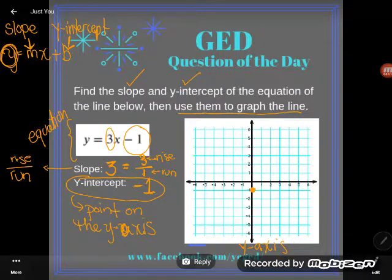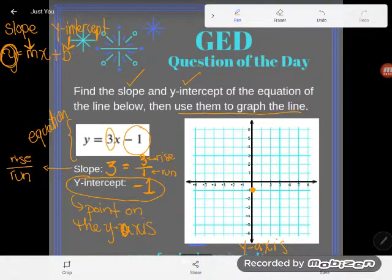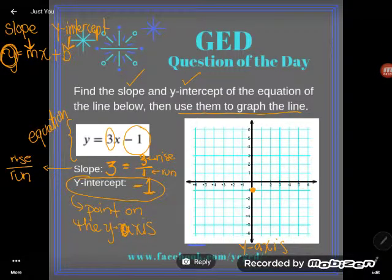So starting at the y-intercept that I was just at, I'm going to move. I'm going to rise 3: one, two, three. And I'm going to run positive 1, so one to the right. And I'll drop another point there.